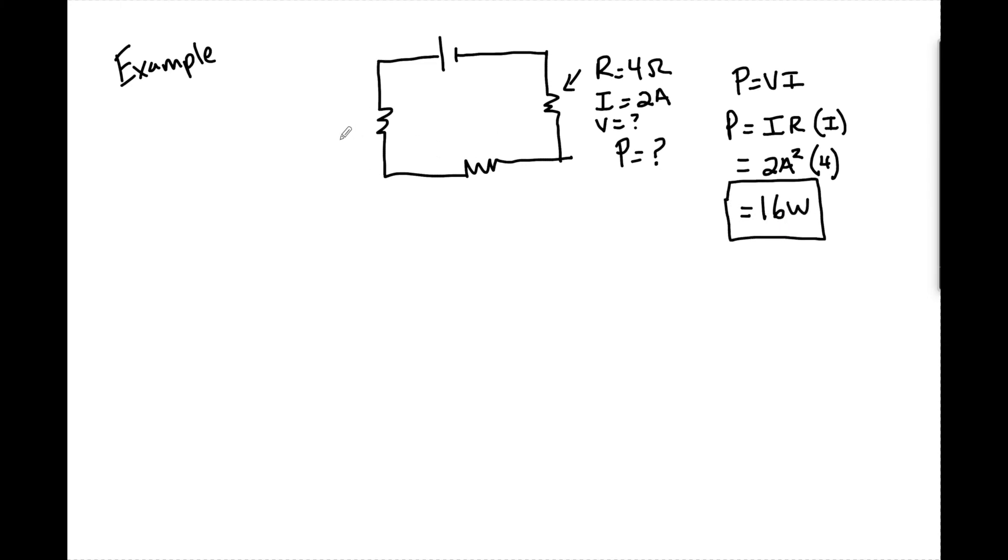But if we look at say R1 over here and we know that the potential difference here is equal to 12 volts and the resistance there is equal to three ohms. I can now find the power here as well.